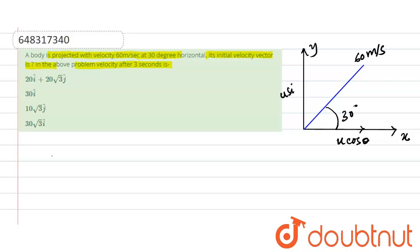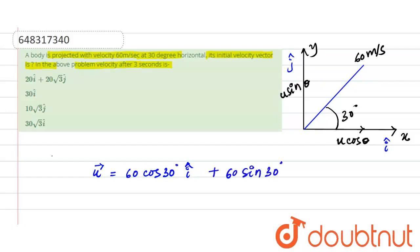The horizontal component is u·cosθ and the vertical component is u·sinθ. So the initial velocity vector u is: 60cos30° î + 60sin30° ĵ, which gives us 30√3 î + 30 ĵ, since cos30° = √3/2 and sin30° = 1/2.